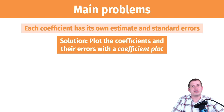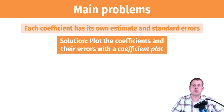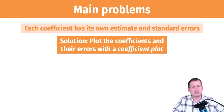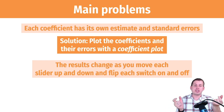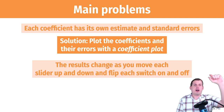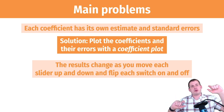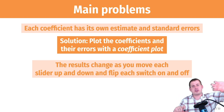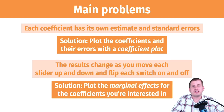A coefficient plot is a quick way to see the size of your different coefficients — which ones are big, which are small, which are statistically significant (definitely not zero) versus which ones might be zero. The other issue is that with multiple variables, results change every time you move one slider or switch. The solution here is to plot something called marginal effects for the coefficients you're interested in, holding everything else constant.